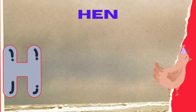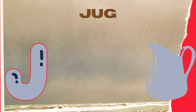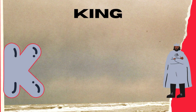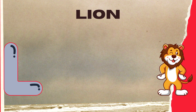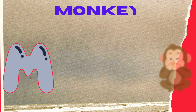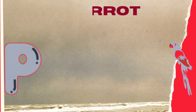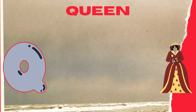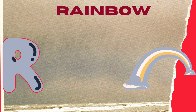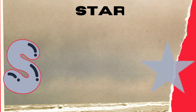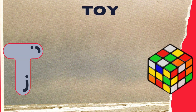H for hen, I for ice cream, J for jug, K for king, L for lion, M for monkey, N for nurse, O for orange, P for parrot, Q for queen, R for rainbow, S for star, T for...